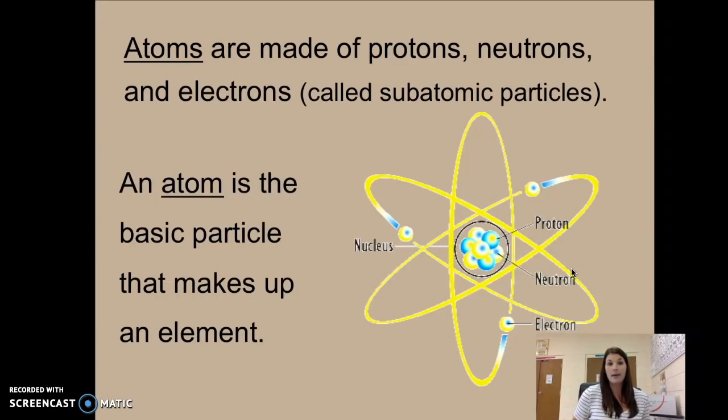Atoms are what make up matter. Atoms are made of protons, neutrons, and electrons. So that's our big fancy word called subatomic particles. Subatomic particles are just the three parts of an atom, the protons, the neutrons, and the electrons.